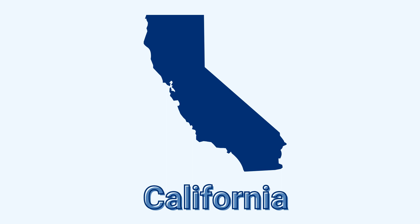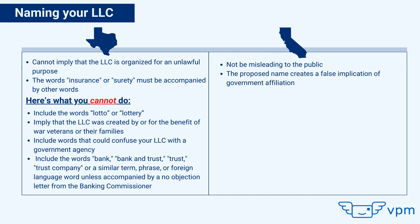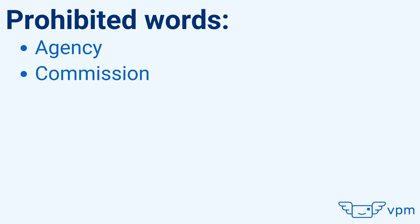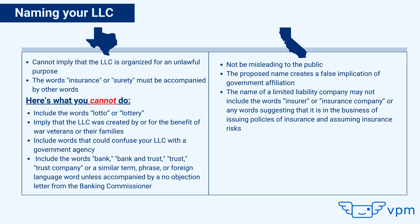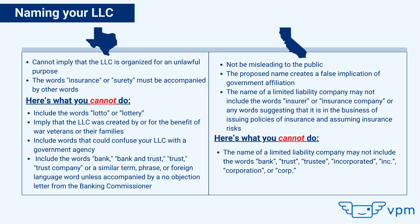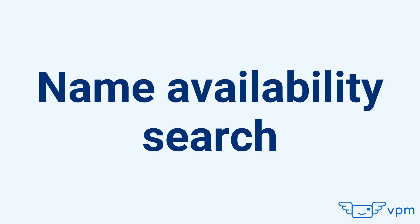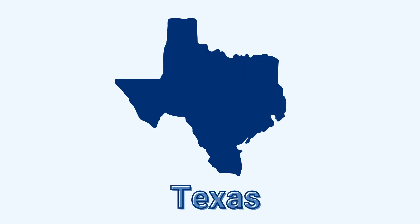Now let's dive into California's name rules. To register a name for an LLC in California, it must not be misleading to the public. If the proposed name creates a false implication of government affiliation — words like agency, commission, department, bureau, division, municipal, or board — it is not allowed. The name may not include 'insurer' or 'insurance company' or any word suggesting the business issues insurance policies. Lastly, the name may not include 'bank,' 'trust,' 'trustee,' 'incorporated,' 'inc,' 'corporation,' or 'corp.'